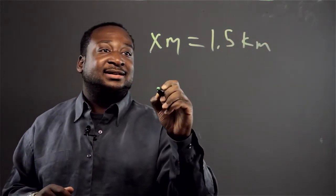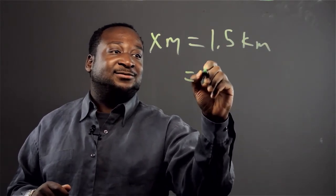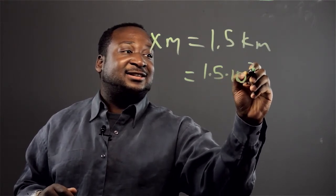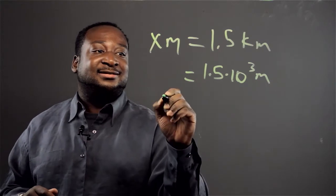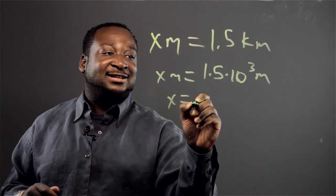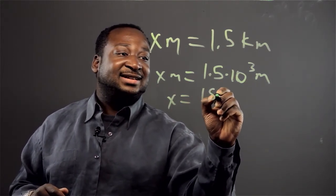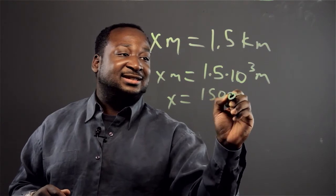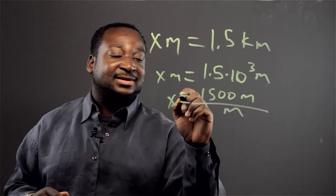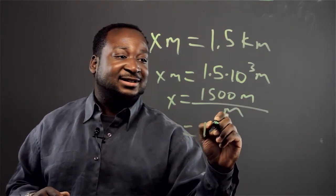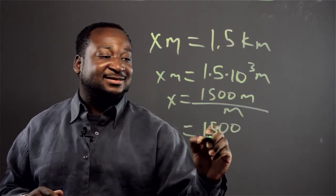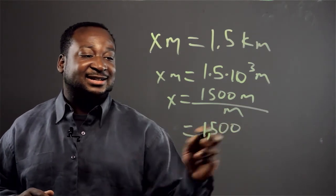That equals 1.5 times 10 cubed meters. So when we solve for x, we get x equals 1.5 times 1,000 — and the units cancel — so we get 1,500 meters.